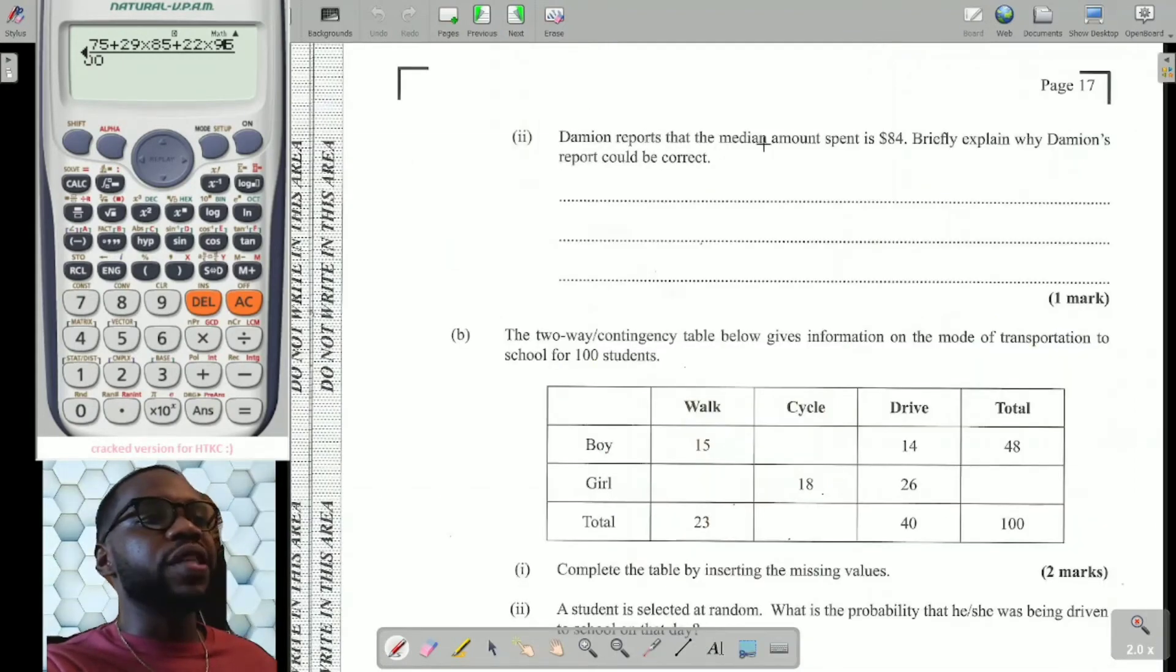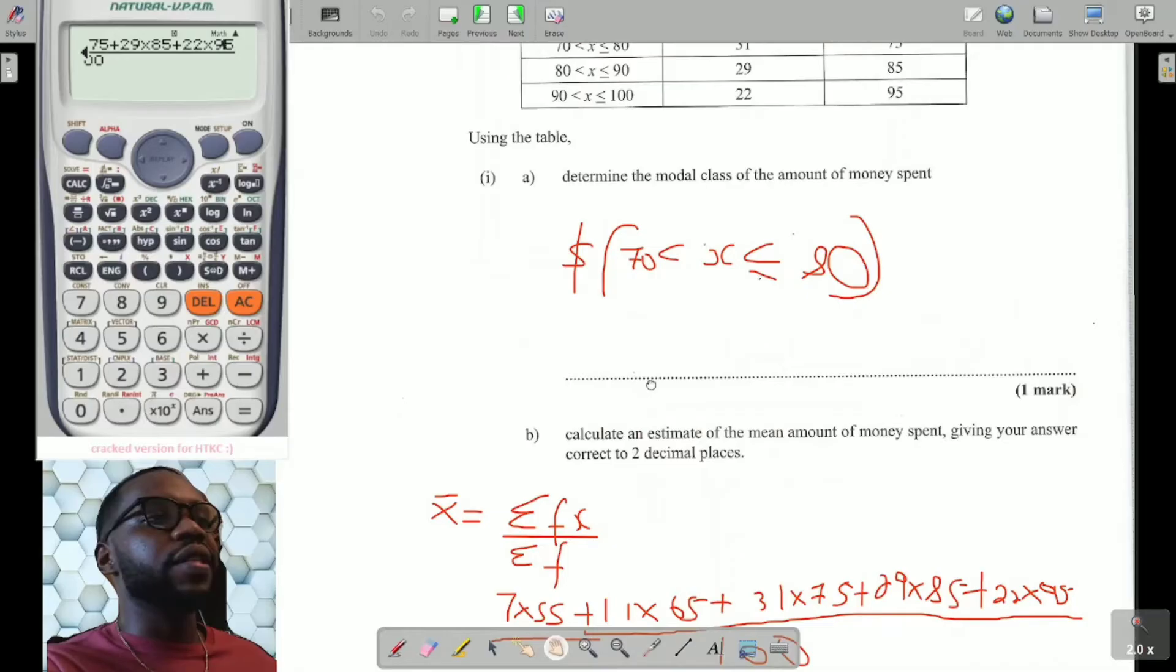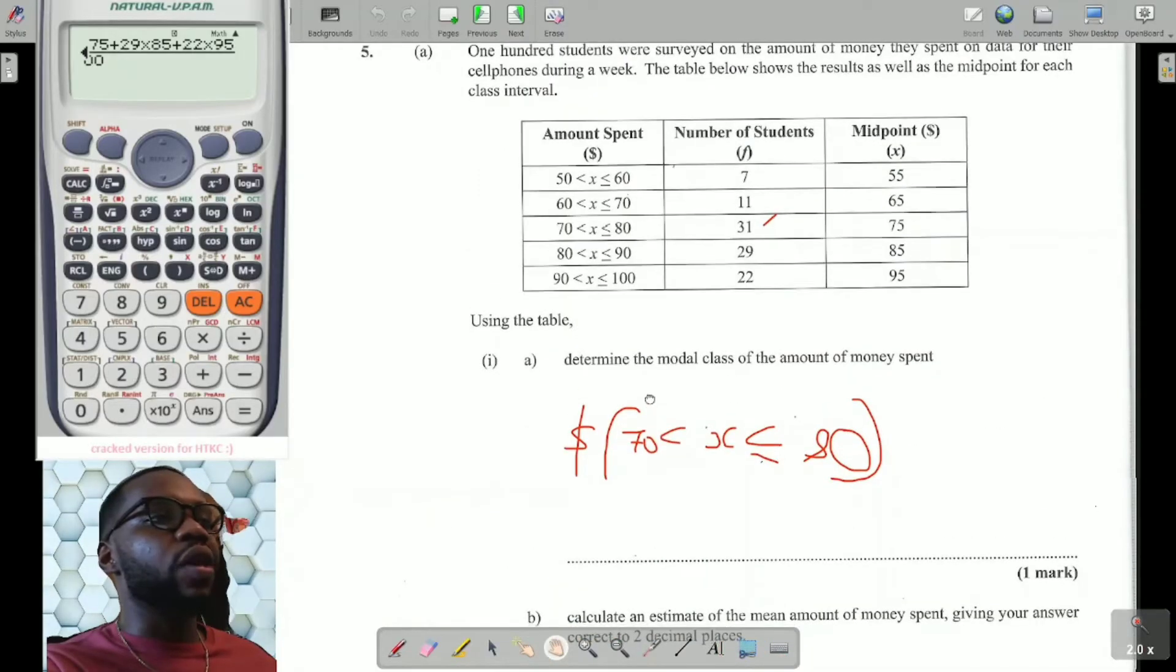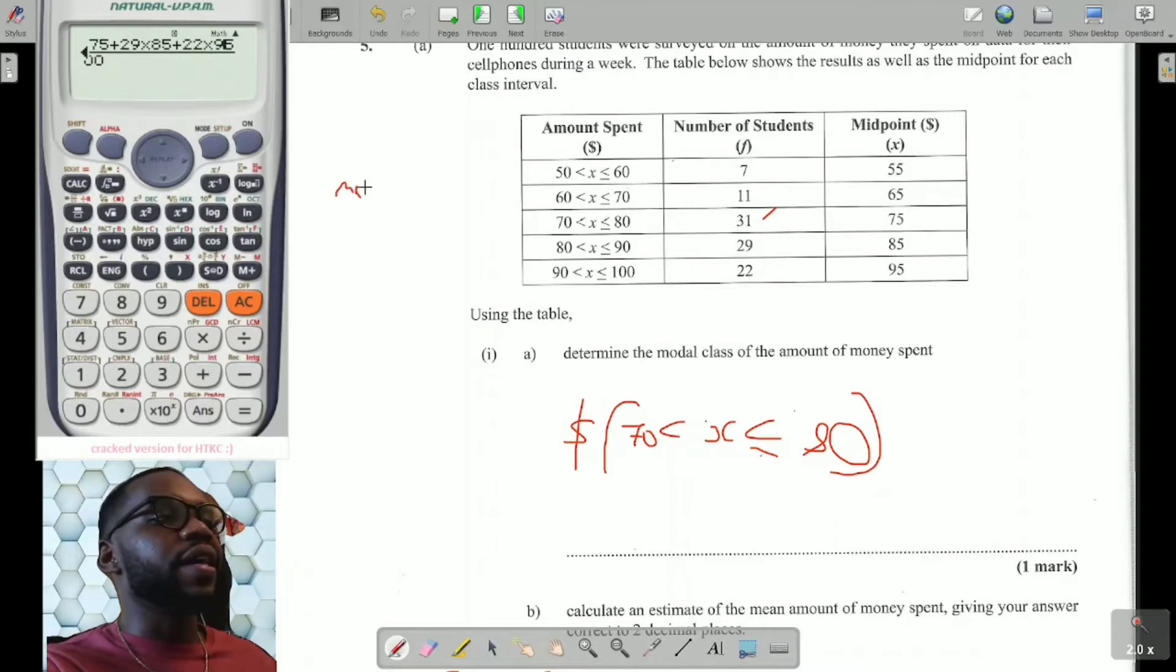It says Damian reports that the median amount spent is $84. Briefly explain why Damian's report could be correct. Let's go back to the table. We're looking for the median. The median is the data value in the middle. Now, we can't directly determine the median from this because we have classes here. And of course, this is grouped data. So there is no way to exactly know the median. But we can find the median class.